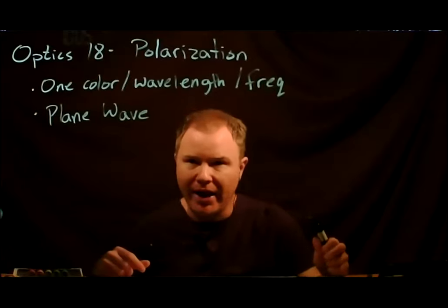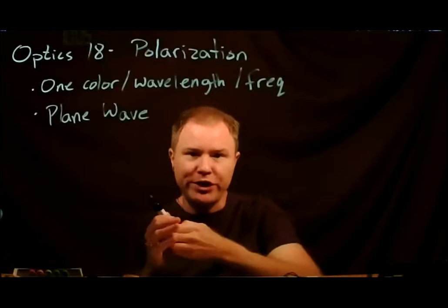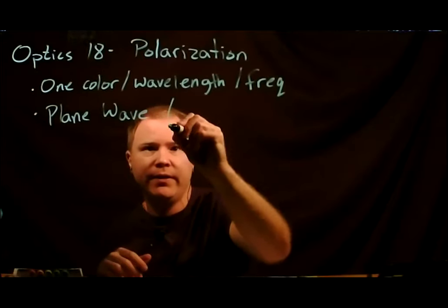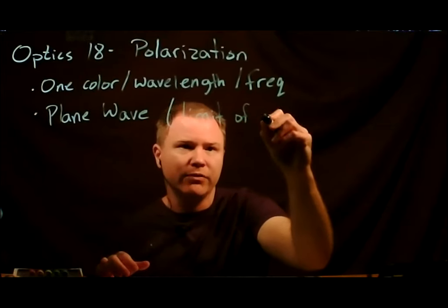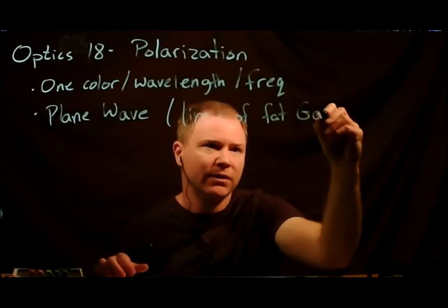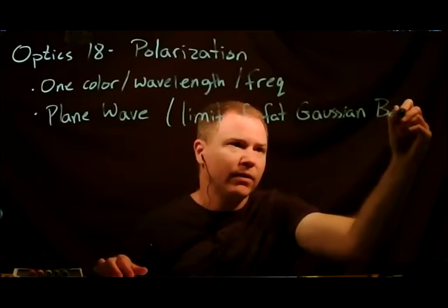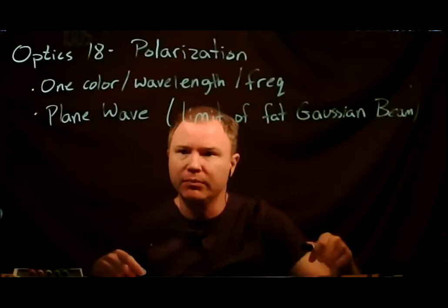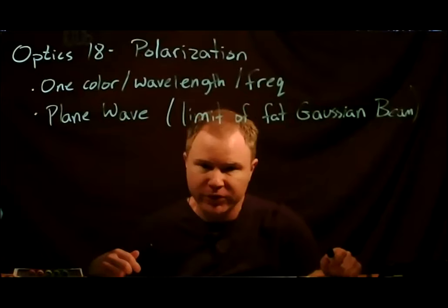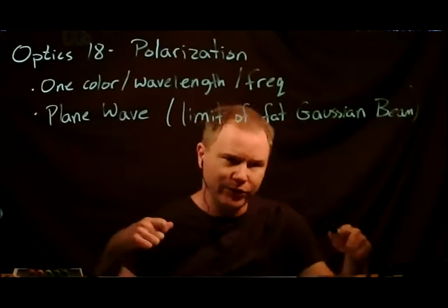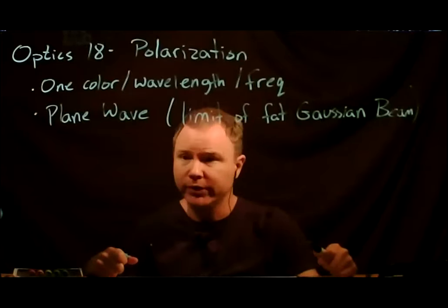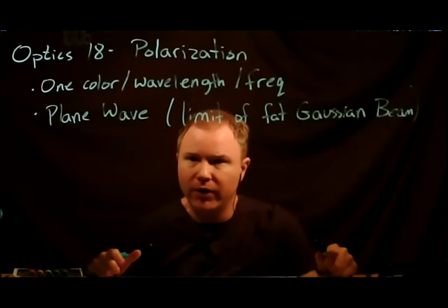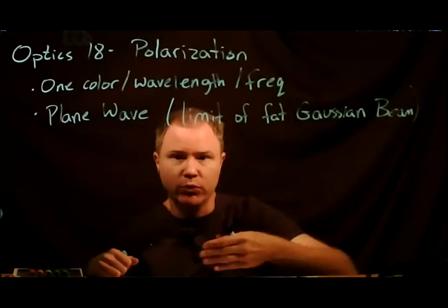Plane waves are infinite sheets of wavefront coming in a particular direction — nothing in physics is truly infinite — but you can think of these as the limit of a very wide Gaussian beam. If you take the waist parameter w₀ and make it very large, the wavefronts are all pretty perpendicular and in that limit there's a plane wave. I'll talk about passing lasers through various polarizers, wave plates, and other devices that manipulate the polarization. The laser beam really is a Gaussian beam, but all the math takes it in the limit of a very wide beam, so we're just looking at plane waves.